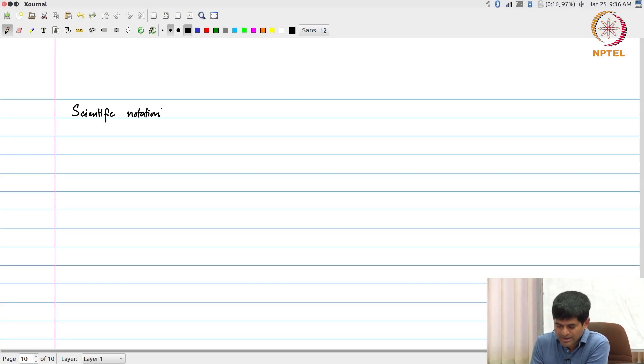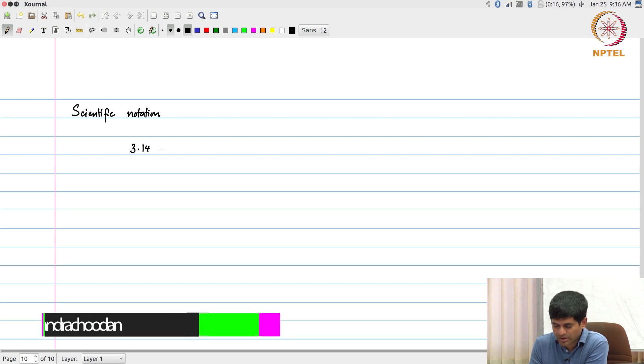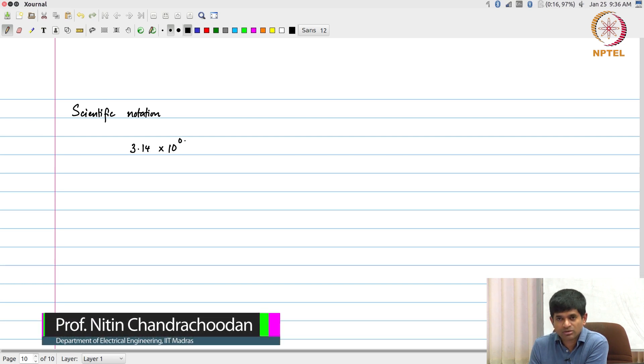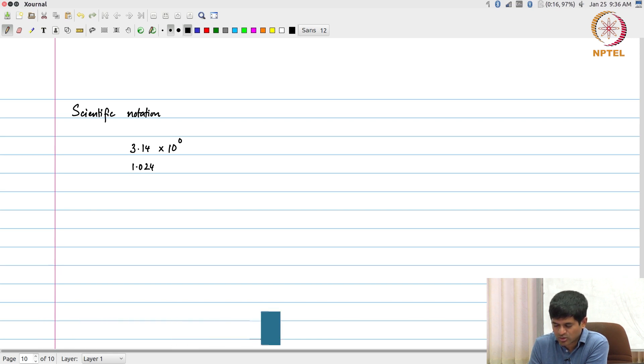Scientific notation essentially says I can write something as 3.14 times 10 to the power 0, or I can write 1.024 times 10 to the power 3, or I can write 2.5 times 10 to the power minus 15.